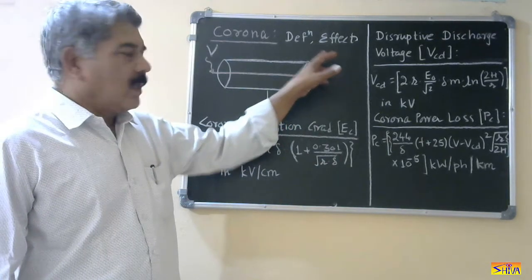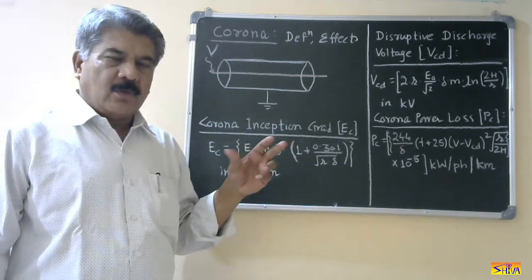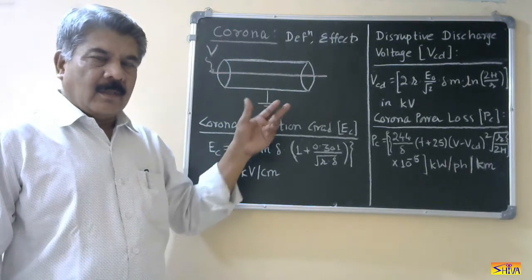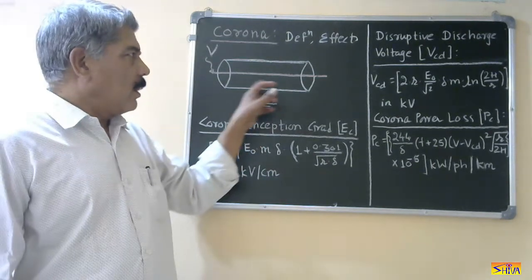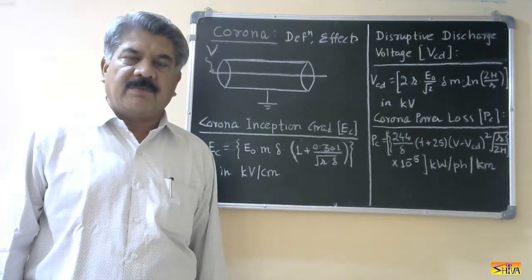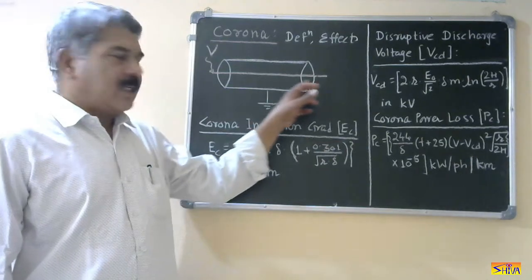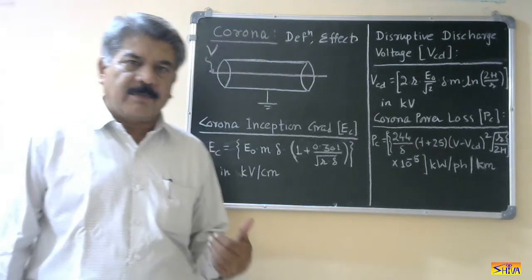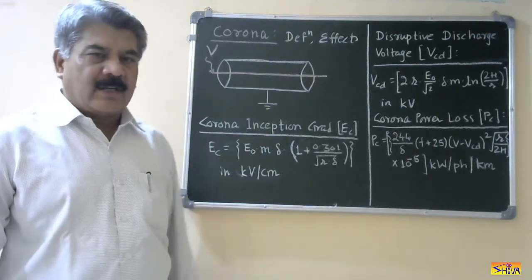Now, let us see what are the effects of corona. The first effect is that the air is ionized — air molecules break into positive ions and electrons, and they are in motion. They require some energy to keep themselves in motion; that energy they draw from the conductor and the power supply. So there is active power loss. This effect is very prominent in case of EHV lines, because in EHV lines the voltage gradient on the surface of the conductor is very high and corona power loss is very high. That is one of the factors considered while designing transmission lines for EHV. So the first effect is active power loss.